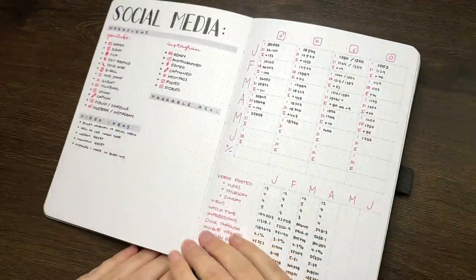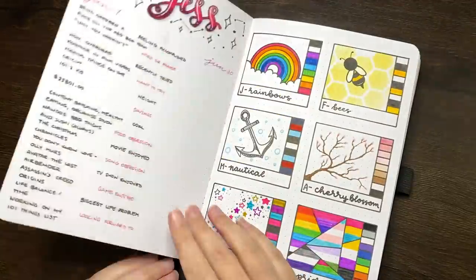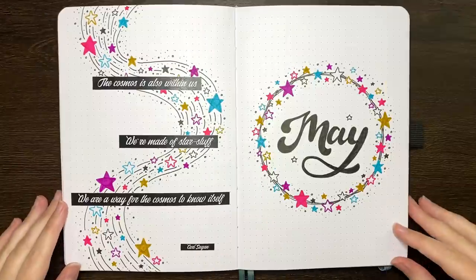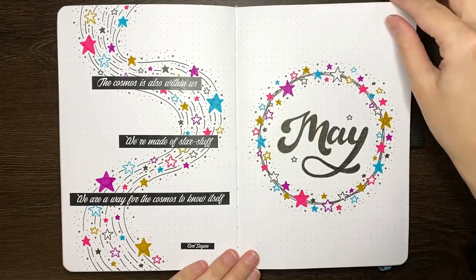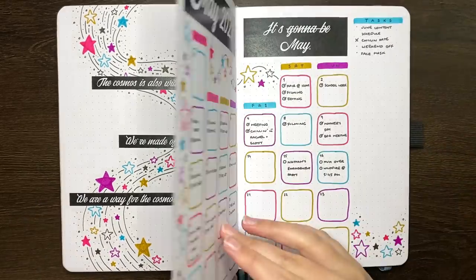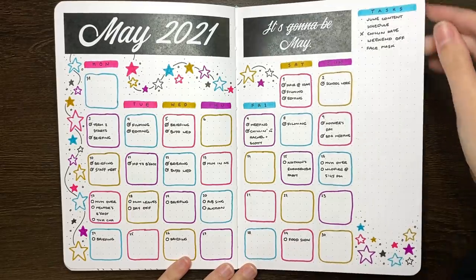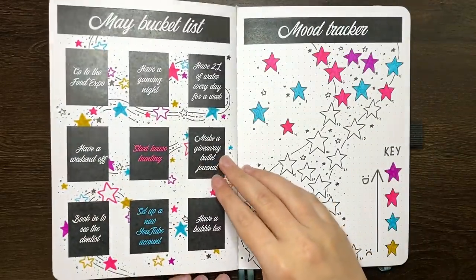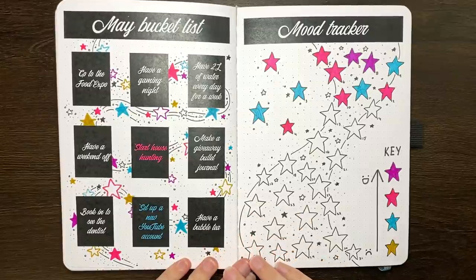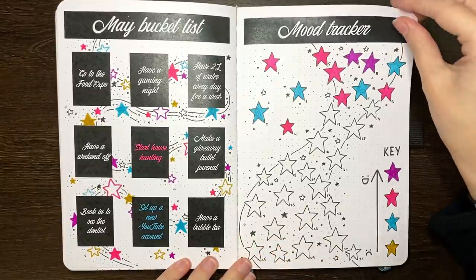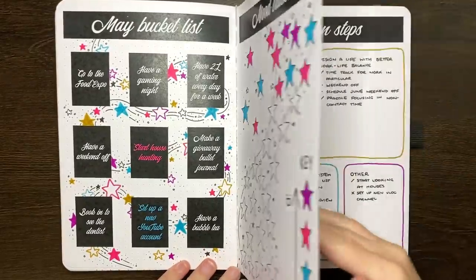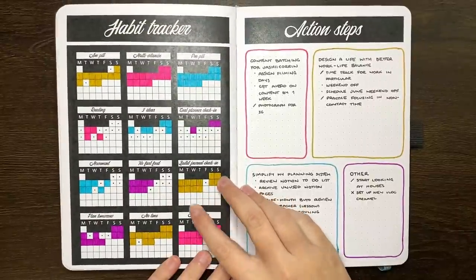But before we get into that, we're as always going to have a look at how this month is going. Now, as we're only halfway through May, these spreads aren't fully filled in yet, but for the current month my theme is stars in this fun and bright colour palette. I am really enjoying using these. I've found that I'm being pretty consistent with getting into my journal and filling stuff in, and I'm hoping to continue that for June.